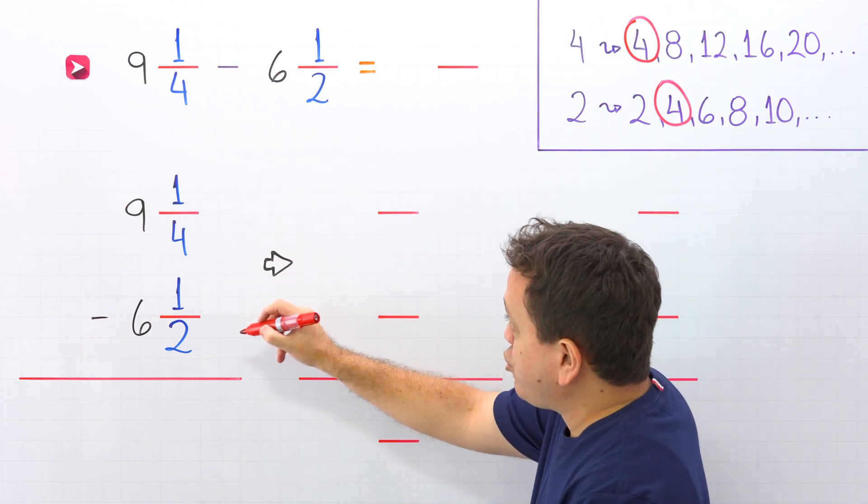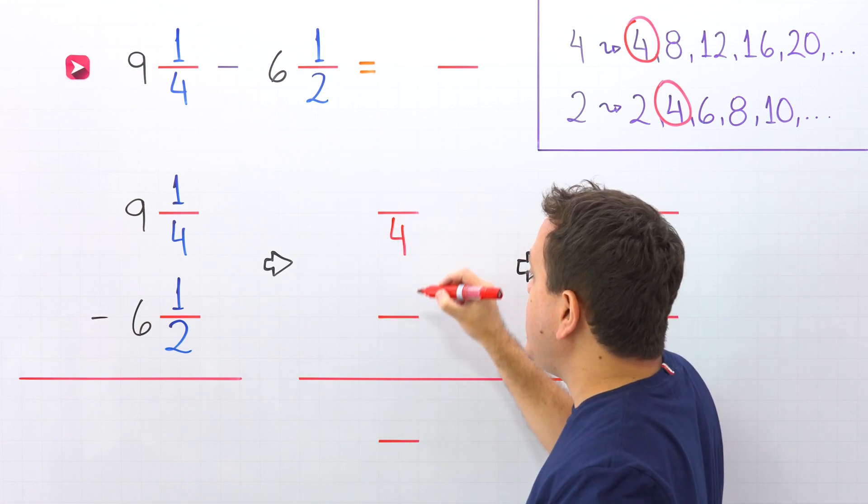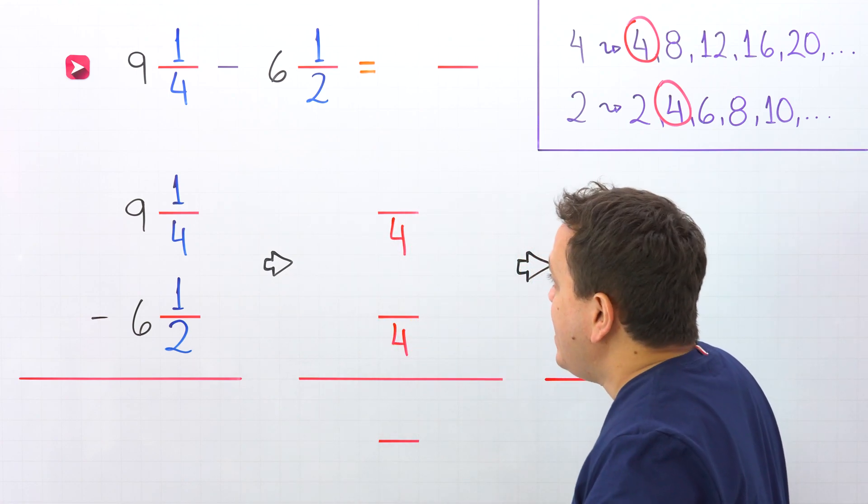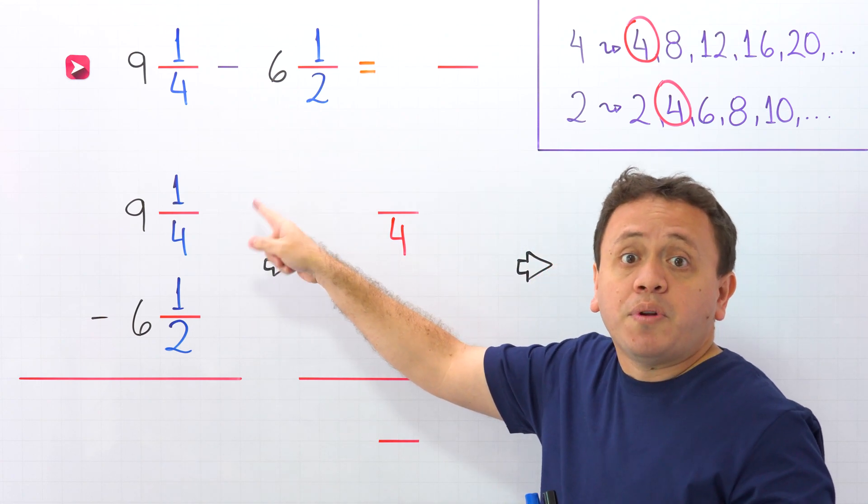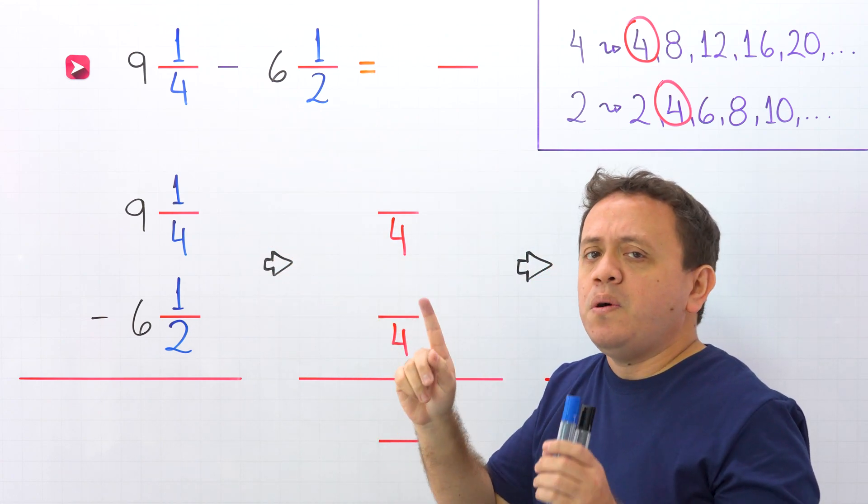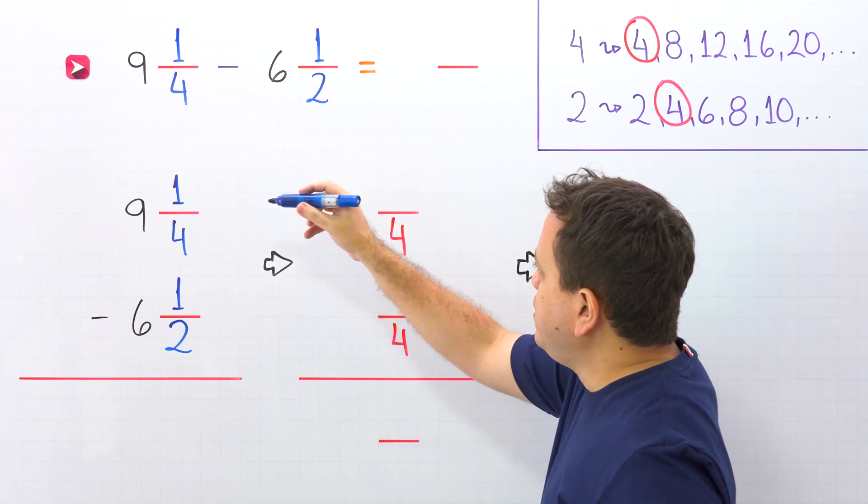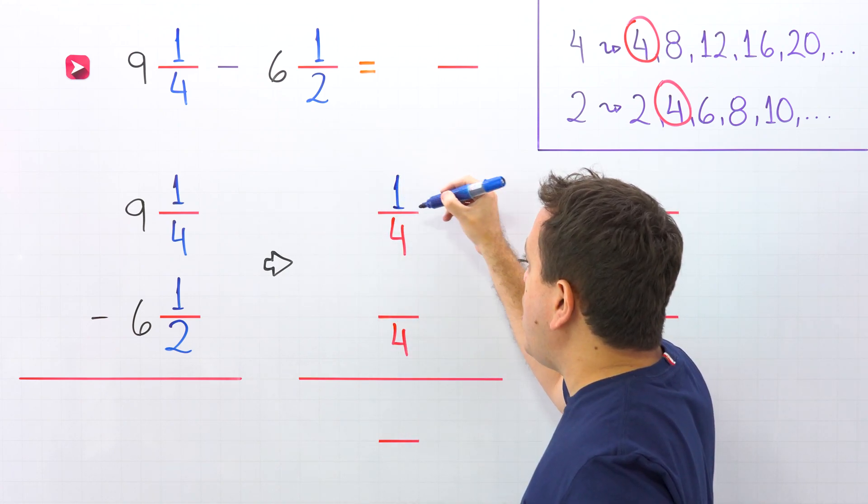Now, for each fraction, we need an equivalent fraction with a denominator of 4. Let's start with 1 fourth. However, this fraction already has a denominator of 4, so we don't need to make any changes. We just put the same fraction, and that fraction is 1 fourth.